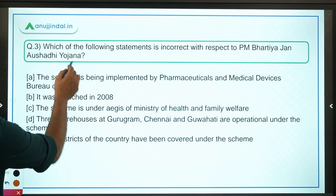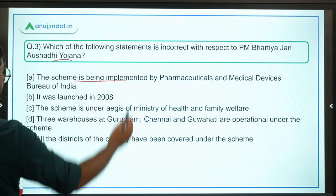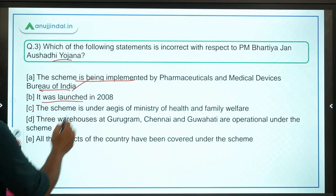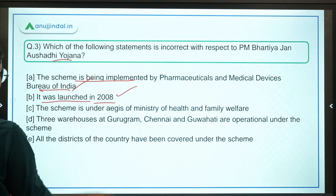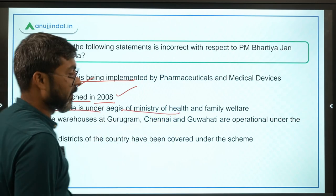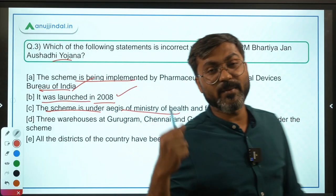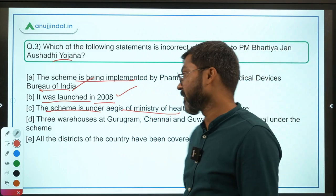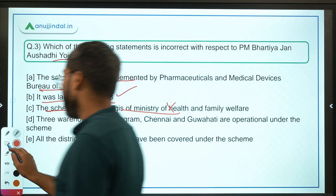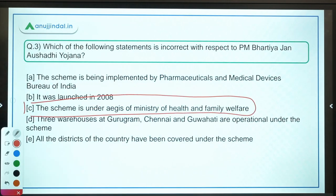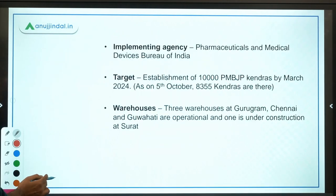Coming back to the question — identify the incorrect statement. The scheme is being implemented by Pharmaceuticals and Medical Devices Bureau of India — correct. It was launched in 2008 — correct. The scheme is under the aegis of the Ministry of Health and Family Welfare — no. As mentioned, the scheme is under the Ministry of Chemicals and Fertilizers. So option C is the correct answer.